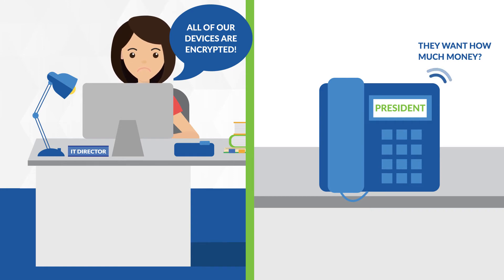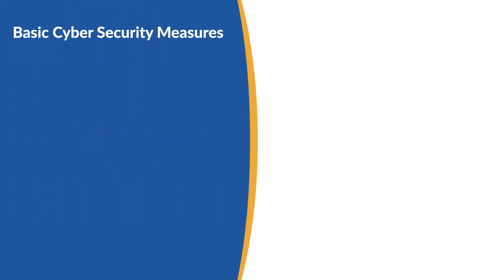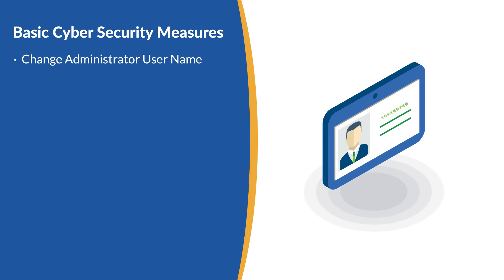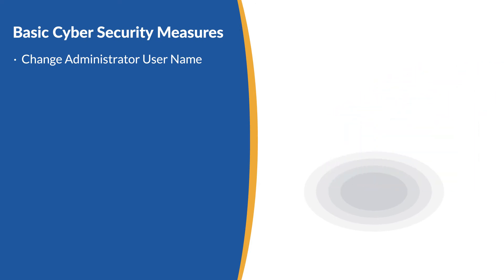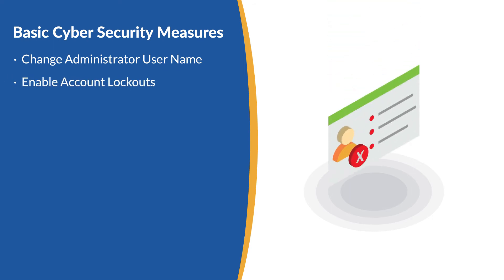To avoid this level of security breach, there are nine basic security measures that every company should take. The default administrator is most commonly attacked — change the name to increase security. Disable user accounts when too many failed logins occur.